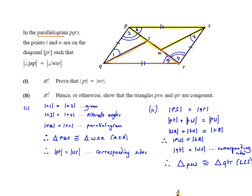The angle PQT would be this one — from P to Q to T. Rather than writing it out fully, I put a 1 here so I can refer to it as angle 1. Likewise, the angle WSR — I put it as 2 so I can refer to it as angle 2. The question asks us to prove that the length PT is equal to the length WR, so we need to show that P to T equals W to R.